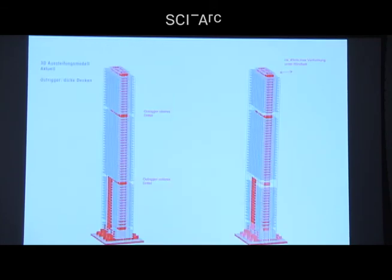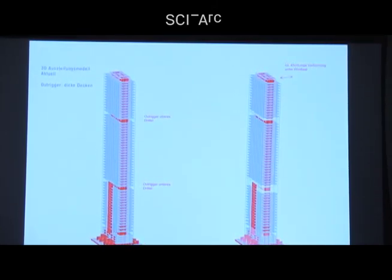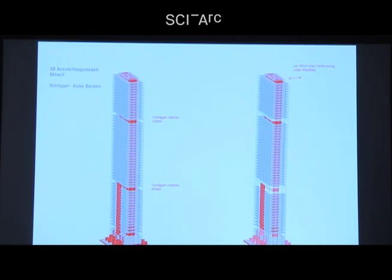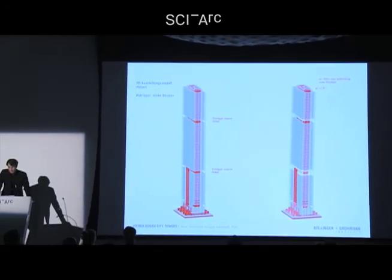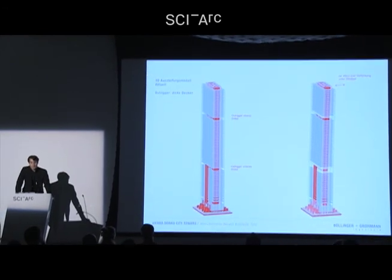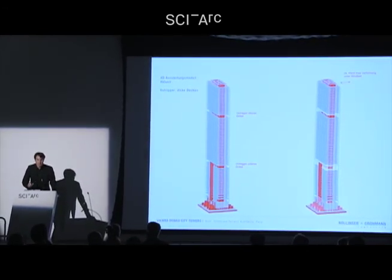We had to think of how do we stabilize this tower - only with the core or with outriggers. If you have very high, high rise buildings, you have usually outrigger buildings, outriggers. Usually with this 220 meters, you don't need that because your buildings are thicker. But in this case, you really needed some outriggers to stabilize the structure.